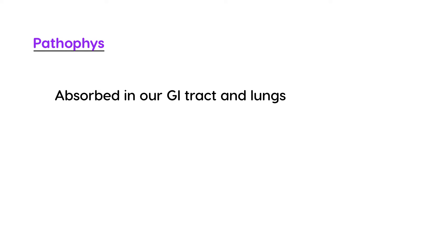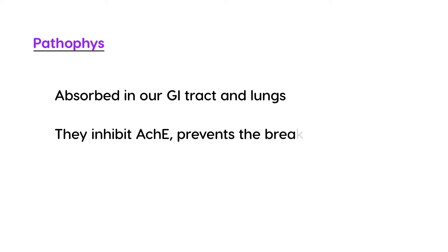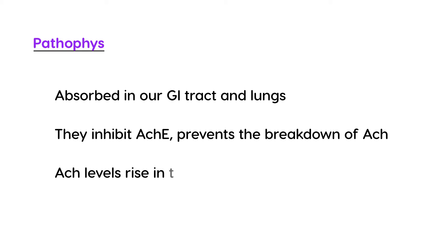Organophosphates, commonly used as insecticides, are absorbed by our body through the GI tract and the lungs. They inhibit the acetylcholine esterase enzyme, preventing the breakdown of acetylcholine. When that happens, acetylcholine levels rise in the synapse, and with a lot of acetylcholine activating those receptors, that's where you get all the symptomatology.